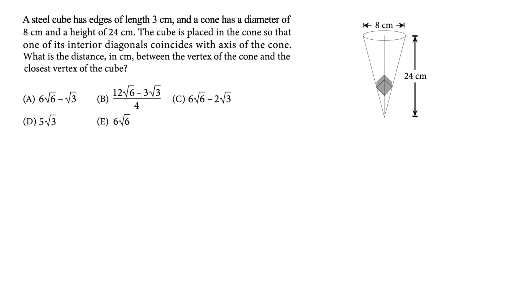A steel cube has edges of length three, and a cone has a diameter of eight centimeters and a height of 24 centimeters. The cube is placed in the cone so that one of its interior diagonals coincides with the axis of the cone. What is the distance in centimeters between the vertex of the cone and the closest vertex of the cube?